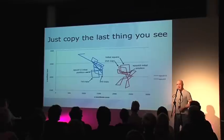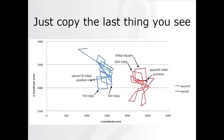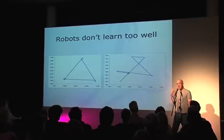If you simply copy the last thing that you see over and over again, what we see here — a map of those two robots — is that very quickly the square dance degenerates. It goes to complete nonsense. This is surprising, isn't it? Robots, we think, are perfect, but they're not. In fact, the robots get it wrong for exactly the same reasons that humans and animals get it wrong when they're copying.